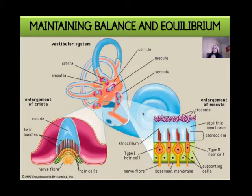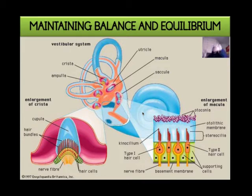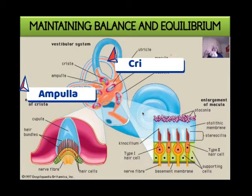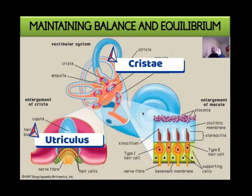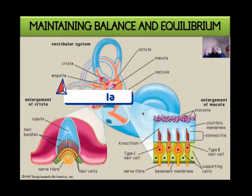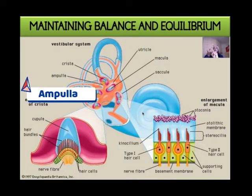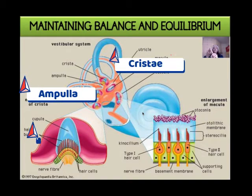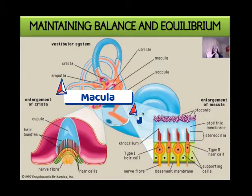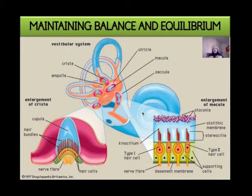Some important words we will be coming across are: ampulla, cristi, utriculus, sacculus, and macula. These are the terms we will encounter when learning about what lies within our semicircular canals and how balance and equilibrium work.